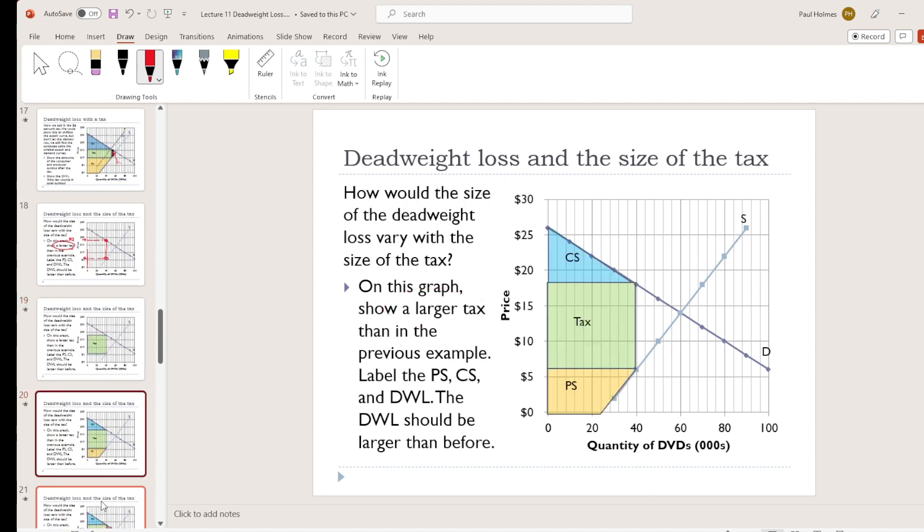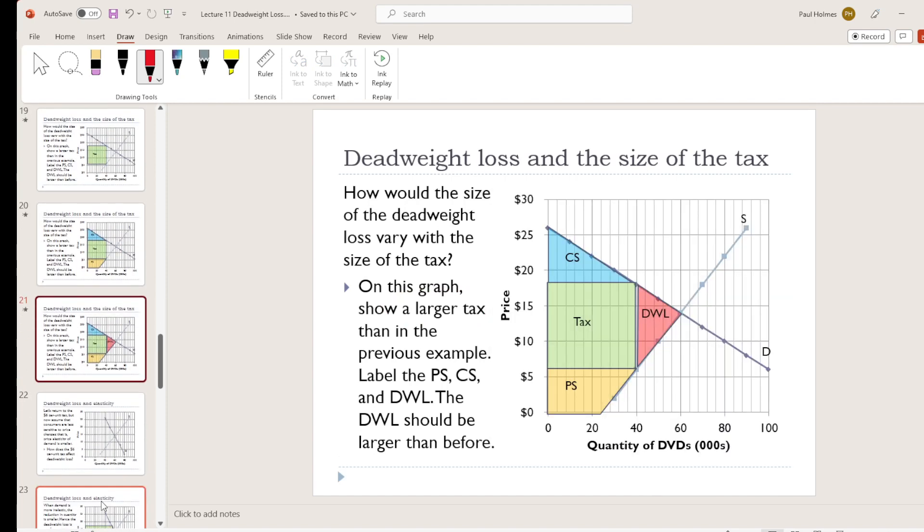Okay, so we've definitely got a bigger deadweight loss than we did before, right? How much bigger? In fact, we can know exactly how much bigger. This is exactly four times as large, not twice as big, like you might think, from double the tax amount, but it's actually four times as big.